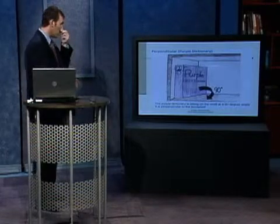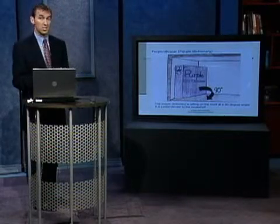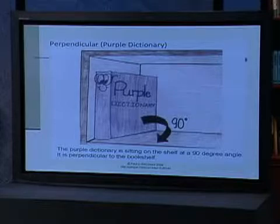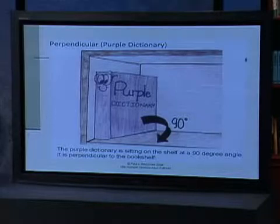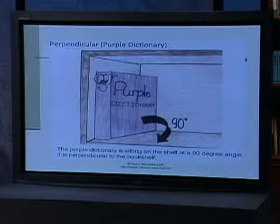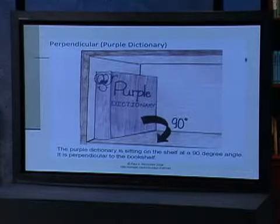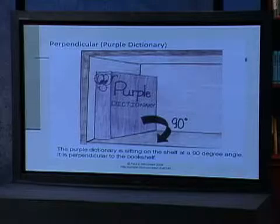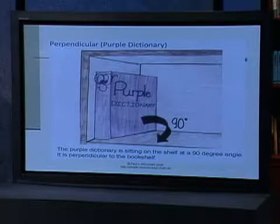Here is another example — this one is a more artistic illustration. It doesn't have to be illustrated this way, but this is just an example showing a purple dictionary sitting on a shelf with the 90 degrees accentuated, and a sentence tying this together. Think of this as making a series of connections: the student hears 'purple dictionary,' which is linked to the familiar purple dictionary, connected to the visual of a purple dictionary at a 90 degree angle, which then leads the student to the meaning of perpendicular.